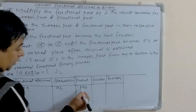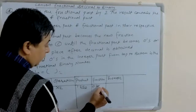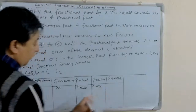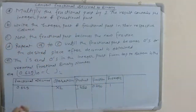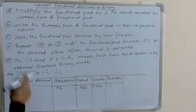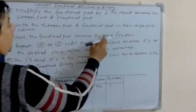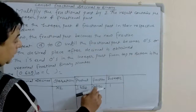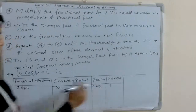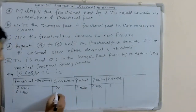0.625 multiplied by 2 equals 1.250. So 0.250 is the fractional part and 1 is the integer part. The fractional part becomes the new fraction, so here the fractional part is 0.250.